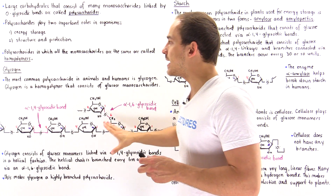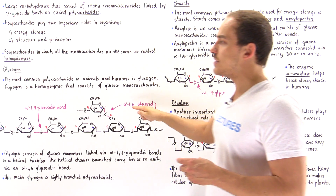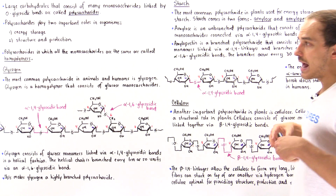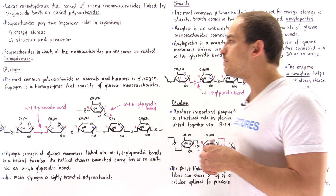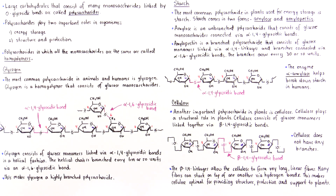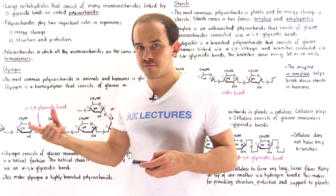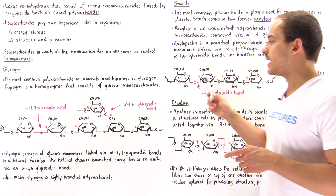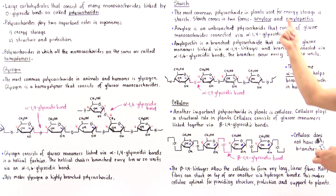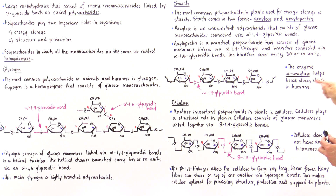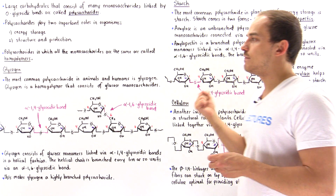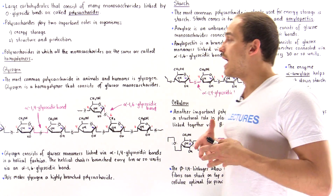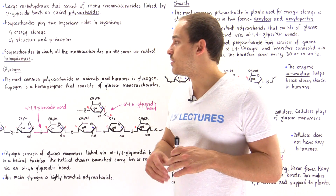So amylopectin is just like glycogen except it contains fewer branching points. Inside our mouth, the salivary glands, and inside our body the pancreas, both release alpha amylase. This enzyme is responsible for breaking down the bonds in amylose and amylopectin when we ingest starch, forming maltose. Maltose is then broken down by maltase at the brush border of our small intestine, as discussed in the previous lecture.